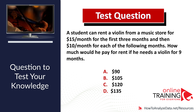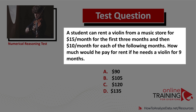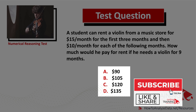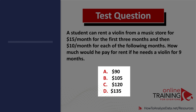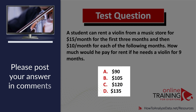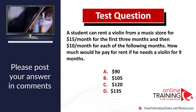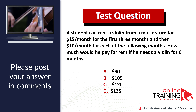Here is a question from the real test. A student can rent a violin from a music store for $15 a month for the first three months, then $10 a month for each following month. How much would he pay if he needs the violin for nine months? Choices: A) $90, B) $105, C) $120, D) $135. Please post your answer in the comment section and I or other experts will reply with the correct answer.